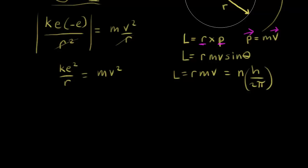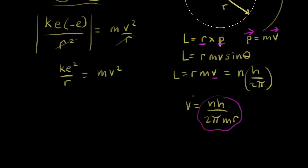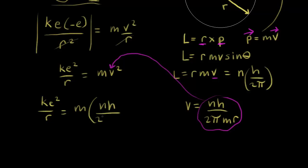Let's solve for V. The velocity is equal to N times H divided by two pi M R. We just solved for V, and now we're going to take that and plug it into our other equation over here on the left. So we would have K E squared over R on the left, and on the right we have M times N times H over two pi M R, all squared.